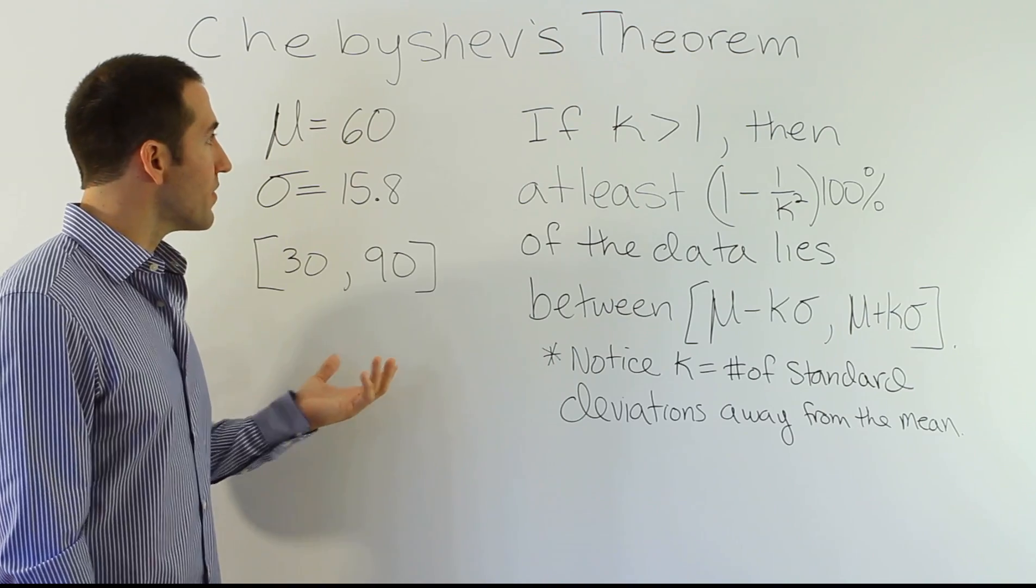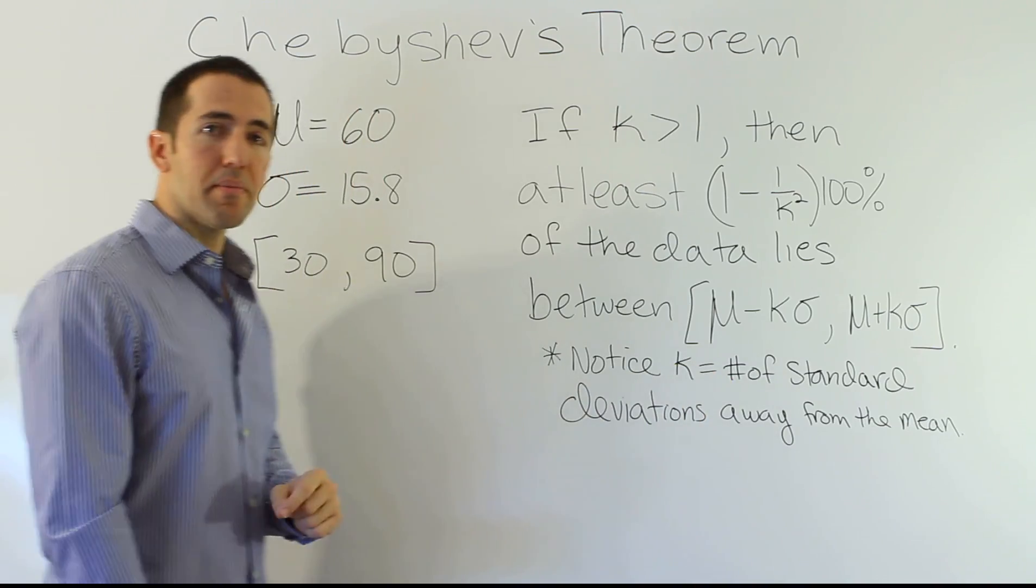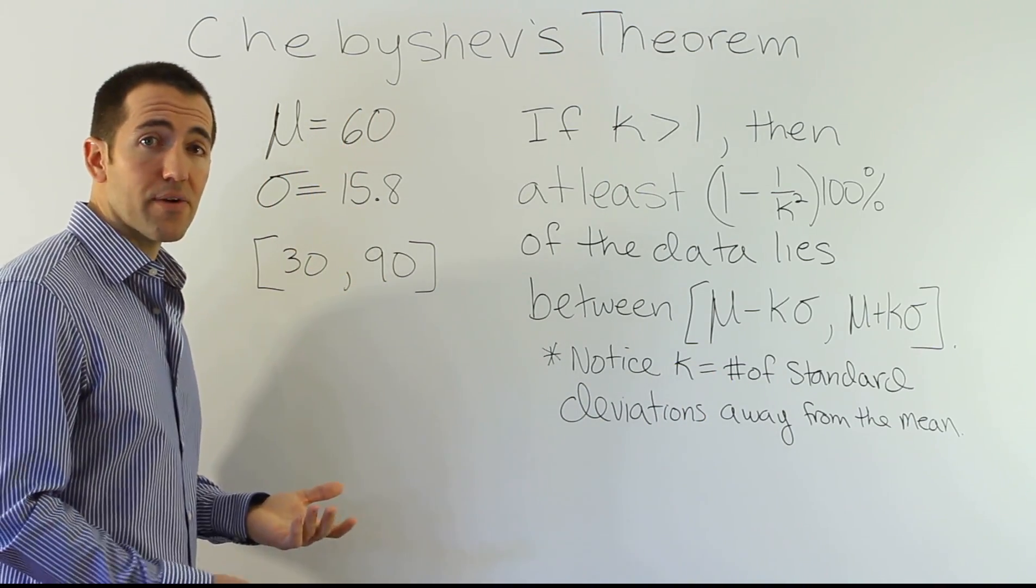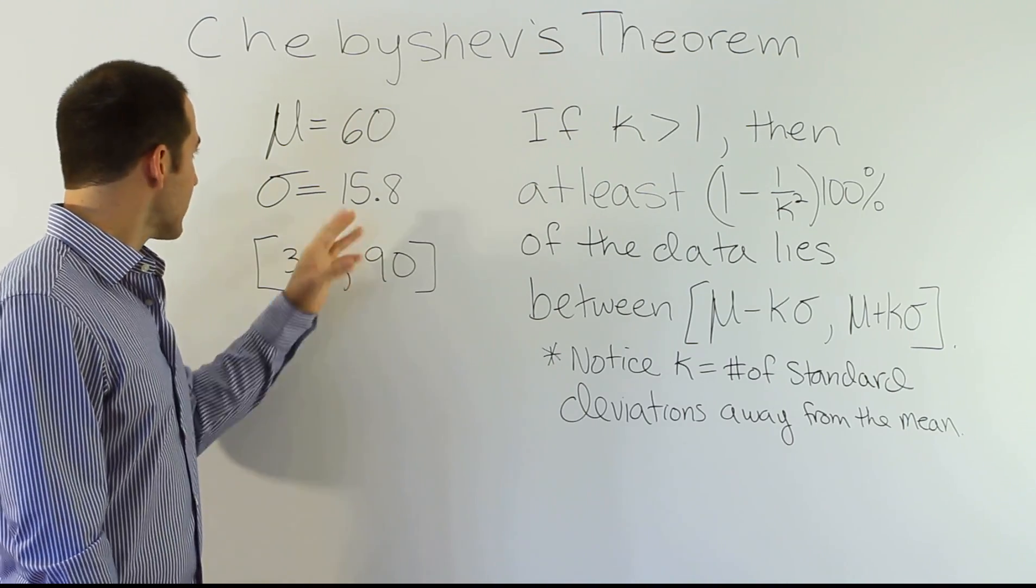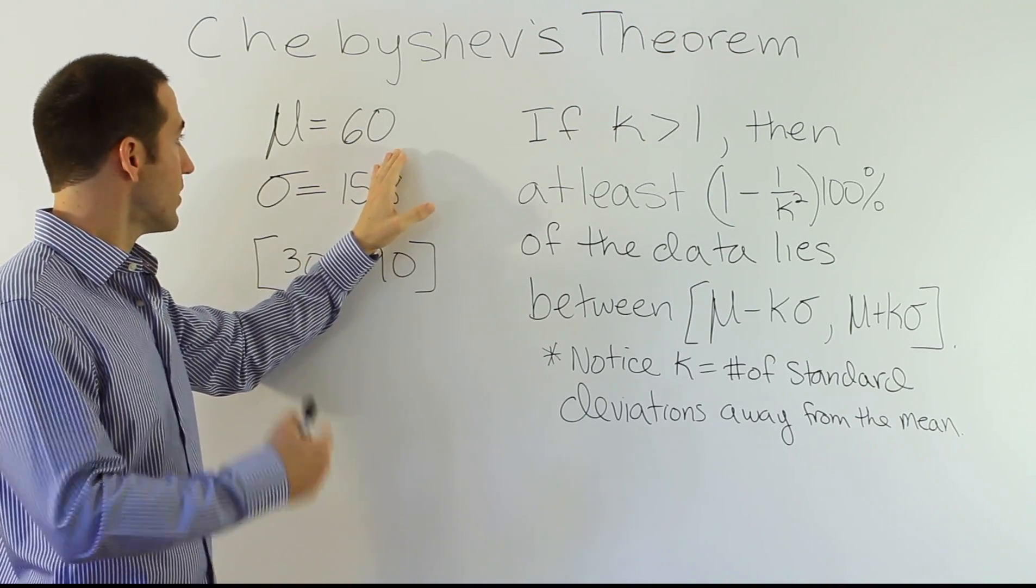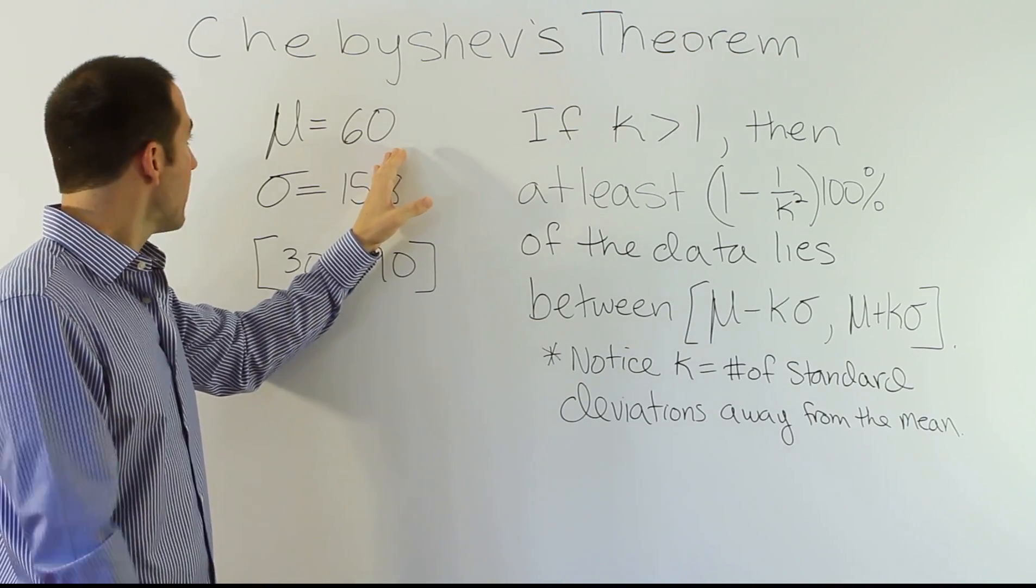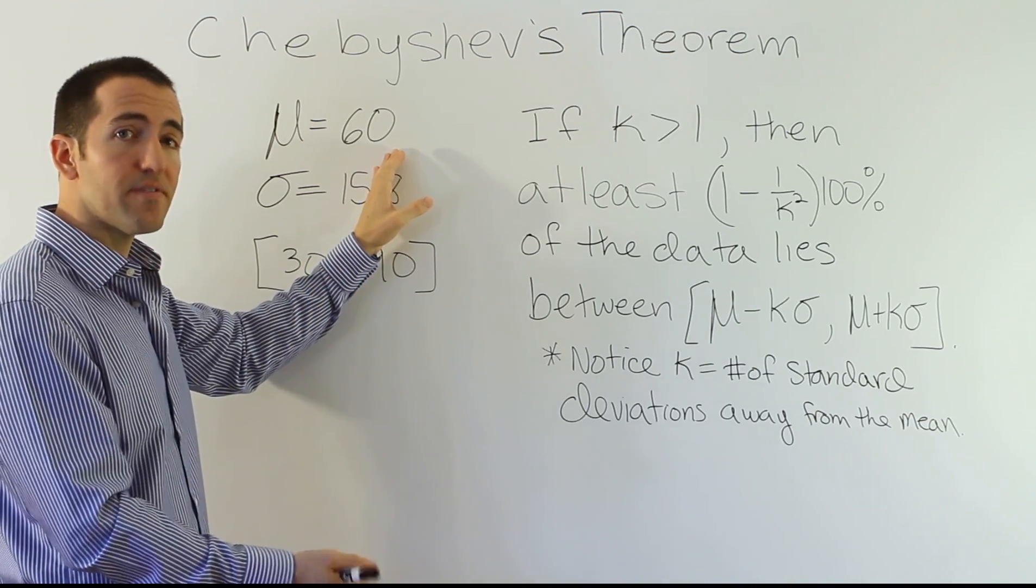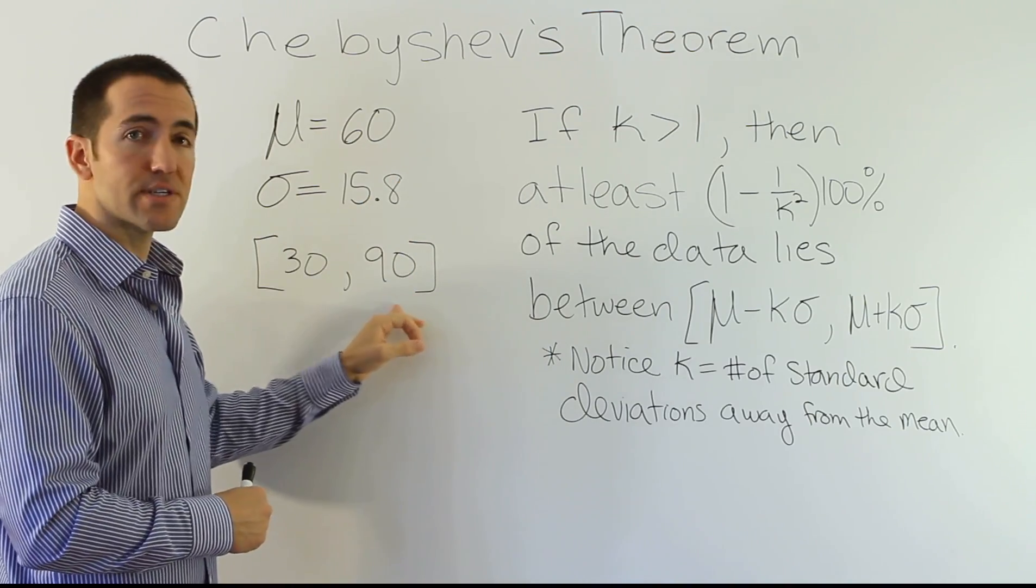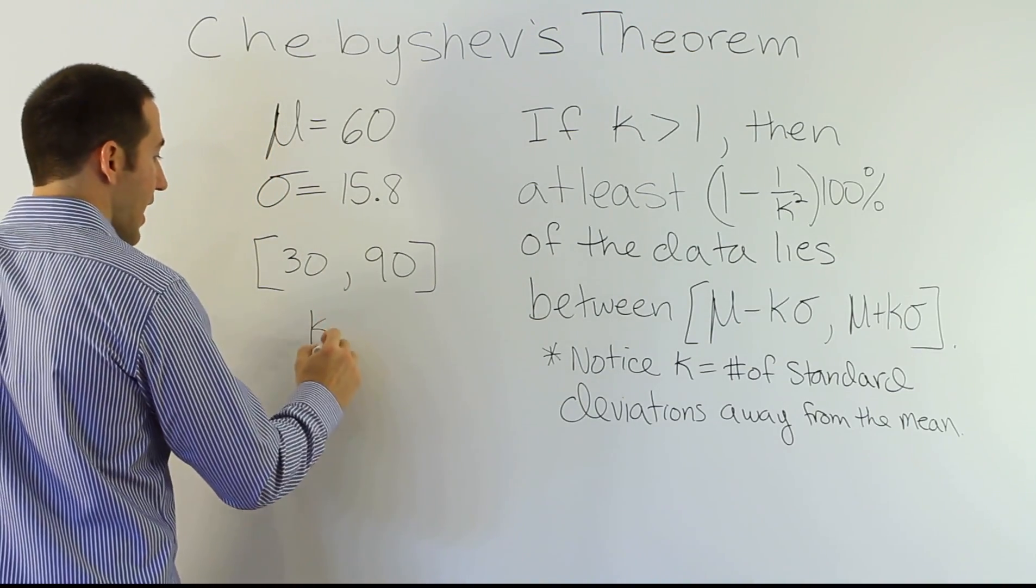Alright, from there, what we can do is determine what this k value is. Remember, k is the number of standard deviations away from the mean. In other words, how do they get from 60 to 90? Well, they added 30. How many standard deviations is that? Well, it's close to 2. Because if it was just 15, it would be, you know, 60 plus 2 15s to get up to 90. Because 60 plus 15 is 75, plus another 15 would be 90. That means it would be 2 standard deviations above average of this number.